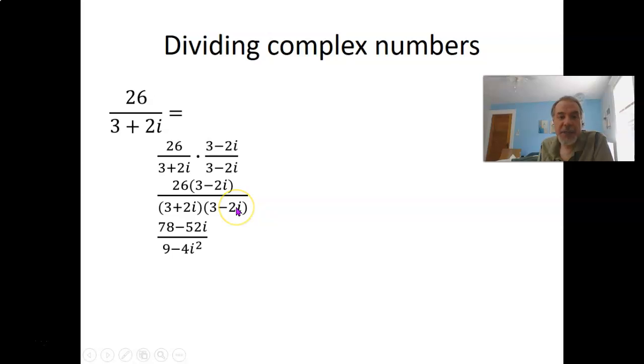And then the plus 2i times the minus 2i is minus 4i squared. But whenever you see an i squared, that's really just negative 1. So down here, we've got 9 minus negative 4, which is 13. Remember, minus a negative is plus a positive. So now we have 78 minus 52i all over 13. So we can break that up into 78 divided by 13, which is 6, minus 52 divided by 13, which is 4 times the i. So the answer turns out to be 6 minus 4i.